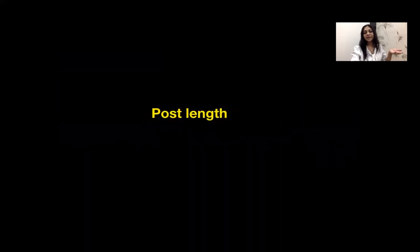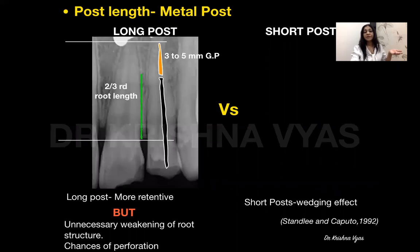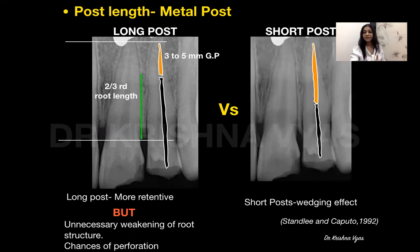What are the other challenges? One is related to post length. When we place a long post, though it helps retention, it also unnecessarily weakens the root structure and there are chances of perforation. Whereas if you place a shorter post, it has a wedging effect which can lead to fracture of the roots.